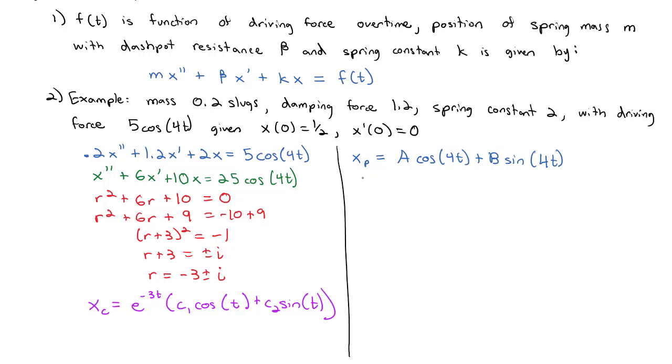We need to find x_p', which is -4Asin(4t) + 4Bcos(4t), and x_p'', which is -16Acos(4t) - 16Bsin(4t).